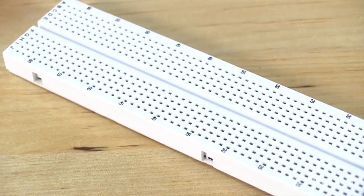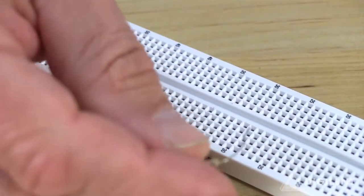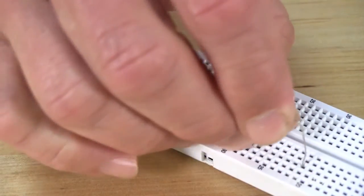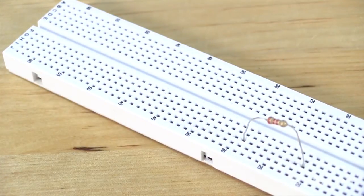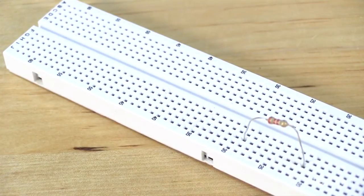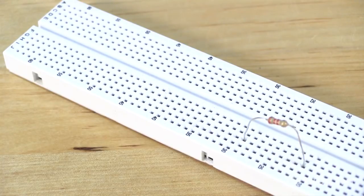The terminals of electrical components, for example this resistor, can easily be pushed into the breadboard holes. This allows us to use the breadboard to quickly interconnect circuit elements in order to create electrical circuits.